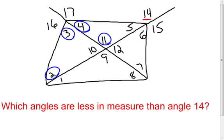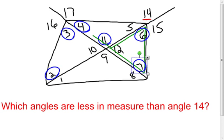Now I can go another way. I'm going to look at angle 11 as being an exterior angle of a triangle — the triangle I've highlighted. Angle 7 is a remote interior angle to exterior angle 11, and so is angle 6. Therefore the measure of angle 6 is smaller than the measure of angle 11. Since angle 11 was already smaller than angle 14, the measure of angle 6 is also smaller than angle 14. Similarly, the measure of angle 7 is smaller than the measure of angle 14.